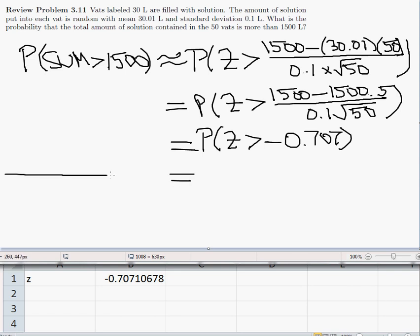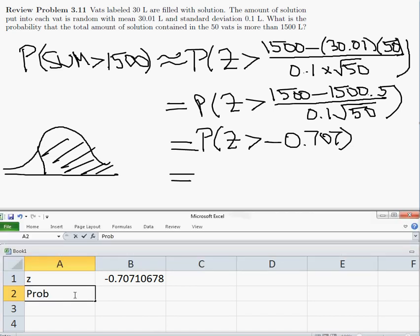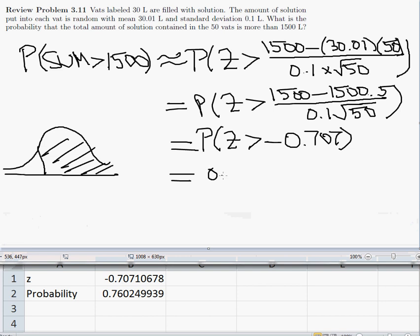So I need the area to the right of negative 0.707, and so the probability will be equal to 1 minus norm s dist of the z value we just got, so the chance of this happening is about 76.02 percent. Okay, so this is a central limit theorem problem involving a sum.